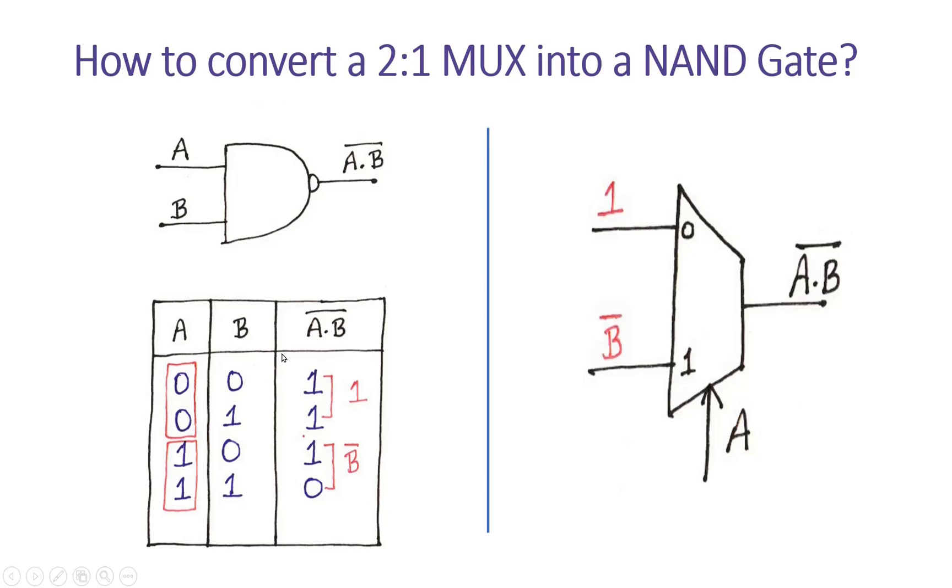When A and B both are zero, output is one. When A and B are zero one, output is one. When A and B are one zero, output is one. When A and B are one one, output is zero. Now I will convert a 2:1 multiplexer into a NAND gate.